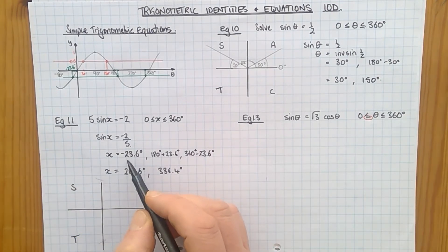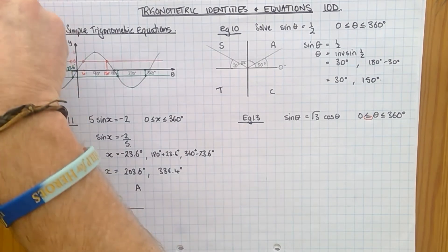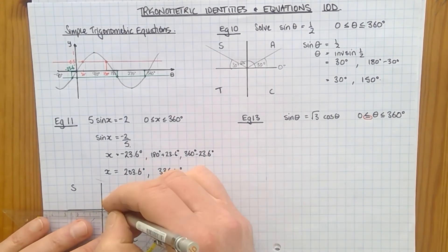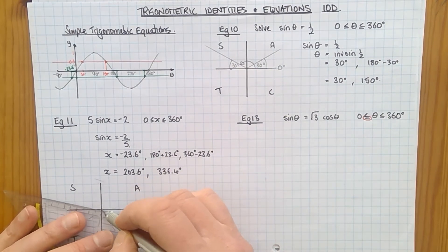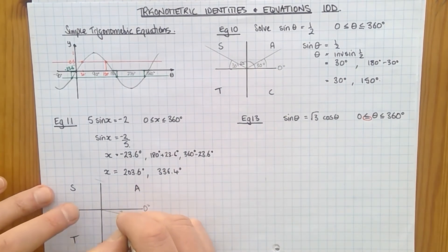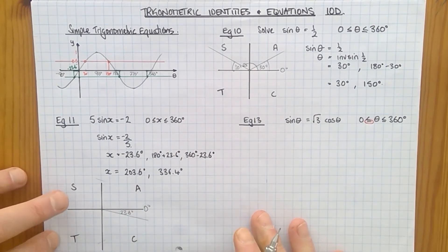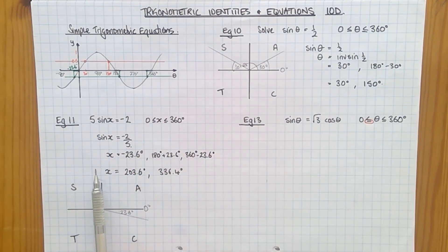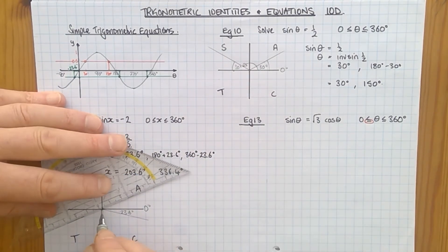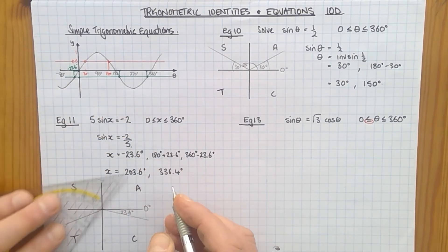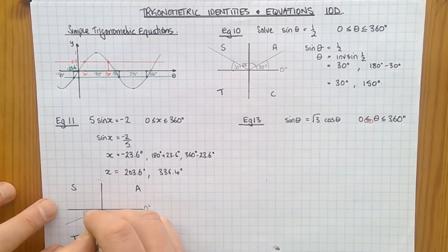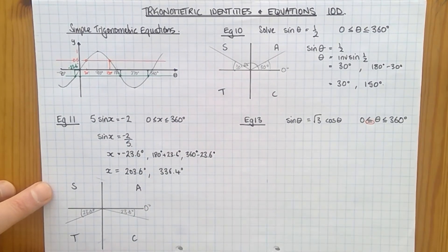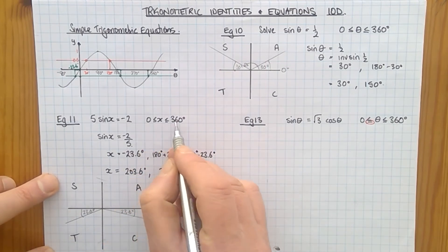Now how to do the same thing on a CAST diagram. The angle minus 23.6. There's 0. Minus 23.6 is going to come down here somewhere, where that is 23.6. We're dealing with sine. And sine reflects in the y-axis. So my other value, my other position rather, is going to be about there, where this angle here is 23.6. So those are the two positions on my CAST diagram. And I know the values I can have are between 0 and 360.